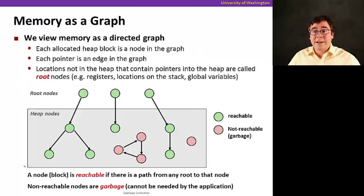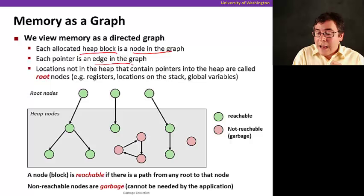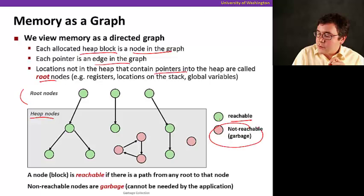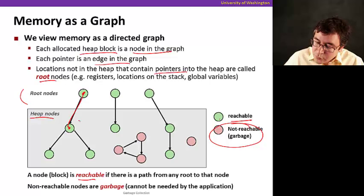So let's get started with the basics. First of all, we're going to look at memory as a graph, as a directed graph. So each allocated heap block is a node in the graph, and each pointer is an edge in the graph. So locations that are not in the heap that contain pointers into the heap are called root nodes. There are things that are outside the heap, so these are the heap nodes that are the root nodes. So green nodes here are reachable, meaning that there is a pointer from the roots to them, and the other ones are not, the ones in red, are not reachable. So we define reachable as follows. A node is reachable if there's a path from any root node to that node.